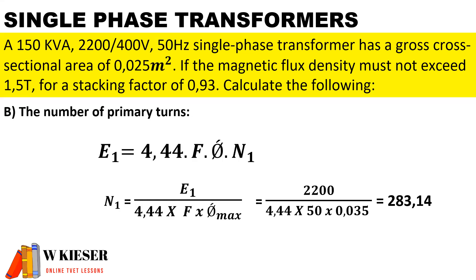In part B, if we need to calculate the number of primary turns, we can use the EMF on the primary side and we just manipulate the equation so that we have an EMF on the primary side of 2200 divided by 4.44, divided by the frequency of 50 hertz, and then divided by the maximum flux of 0.035. If we round it off, we'll have 284 turns.